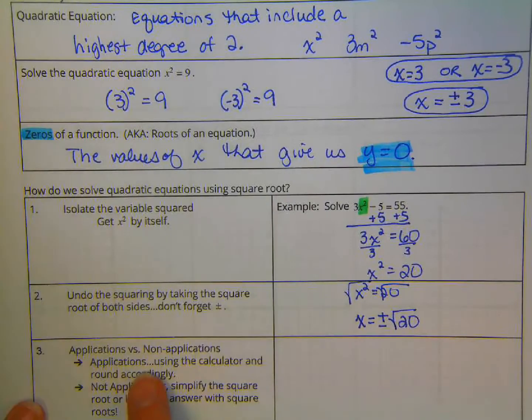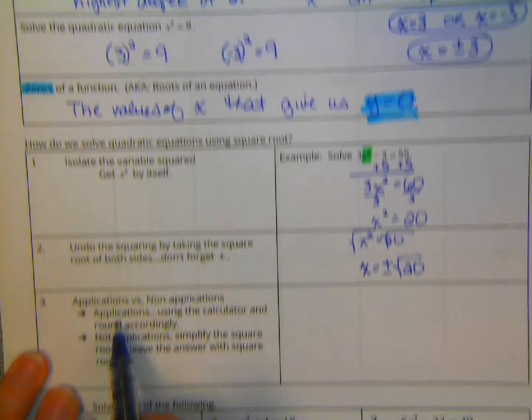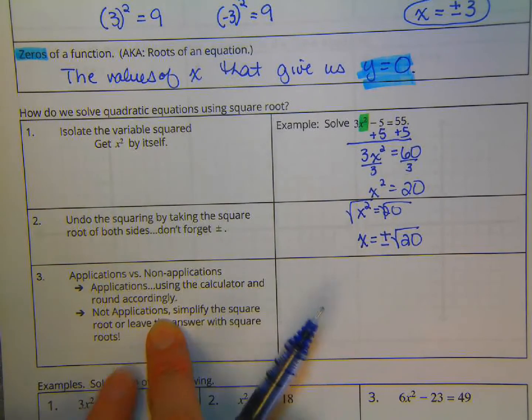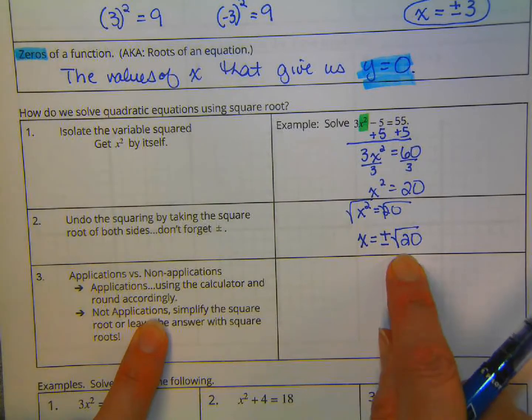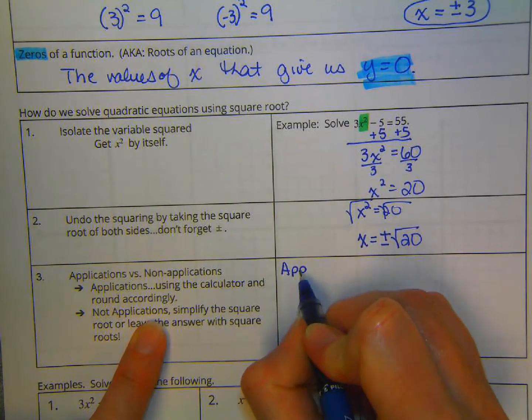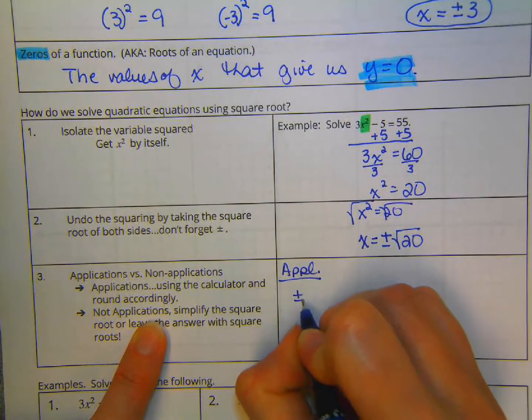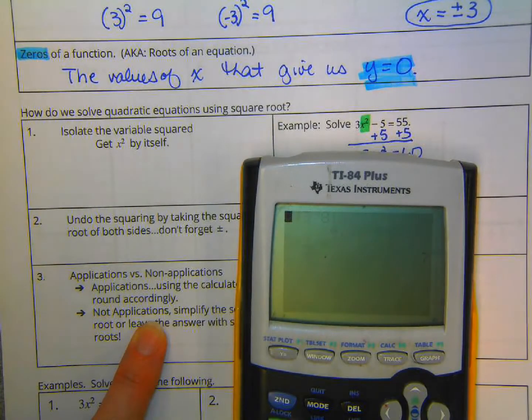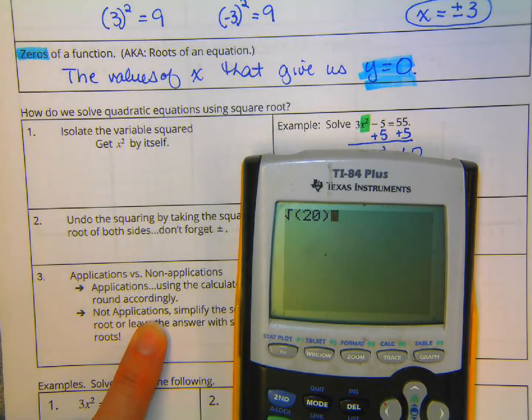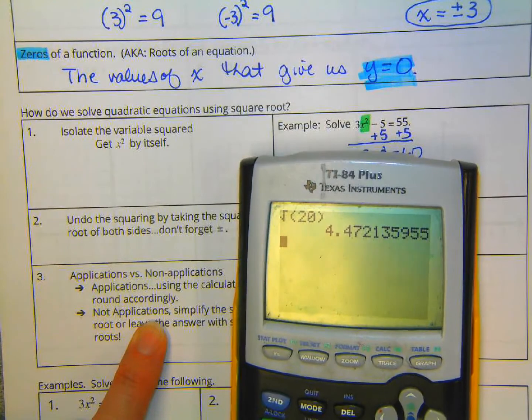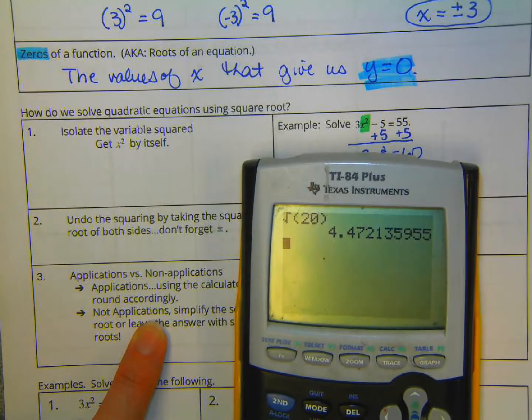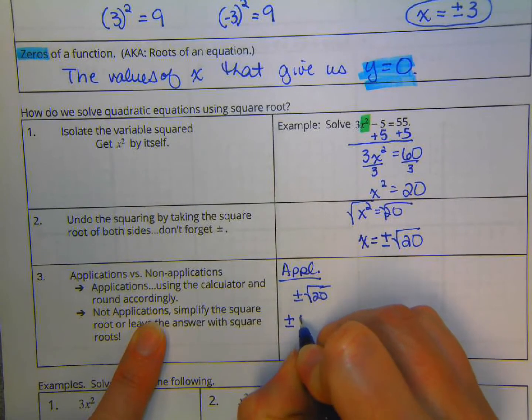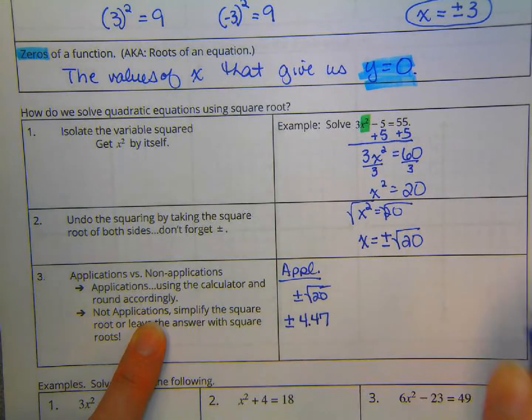Next step. If it's an application problem, just break out your calculator and square root of 20. If it's not an application problem, take this right here. Well, actually, let me show you. I'm going to write this down. If it's an application problem, take this plus or minus the square root of 20. Take your calculator, handy dandy calculator, and square root the 20. And what do you get? 4.472135955. Let's go with 4.47. So plus or minus 4.47. Make sure you round correctly.